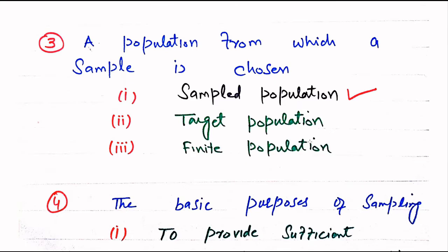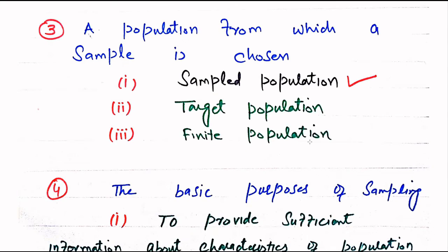Question number 3. A population from which a sample is chosen — Sampled population, Target population, or Finite population. The right answer is Sampled population. Any population from which we draw a sample is called Sampled population.